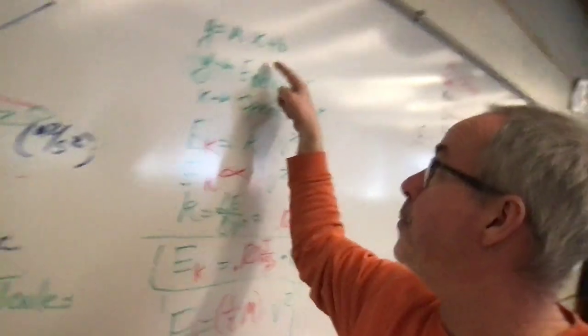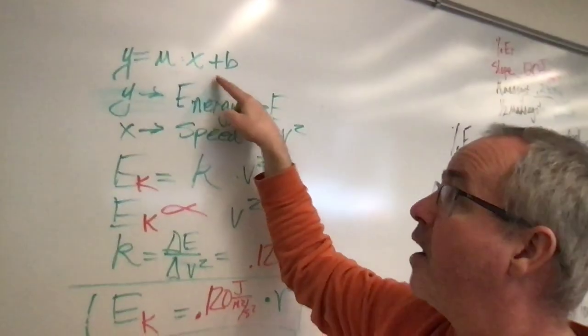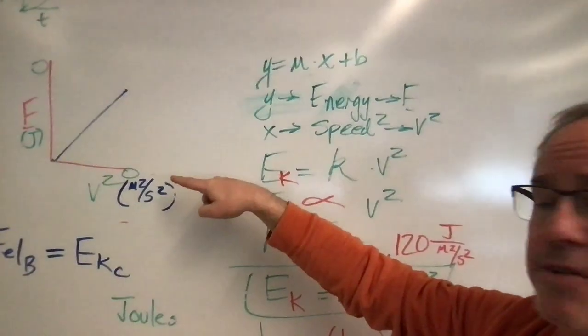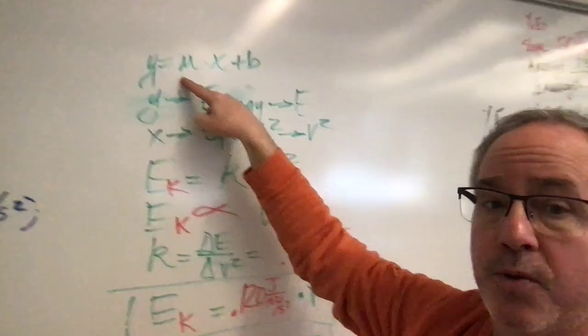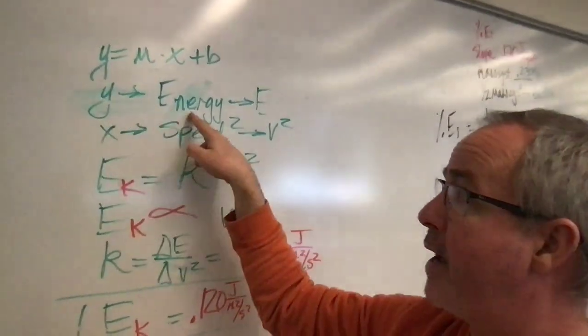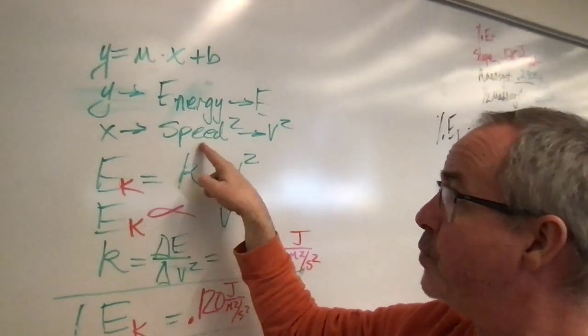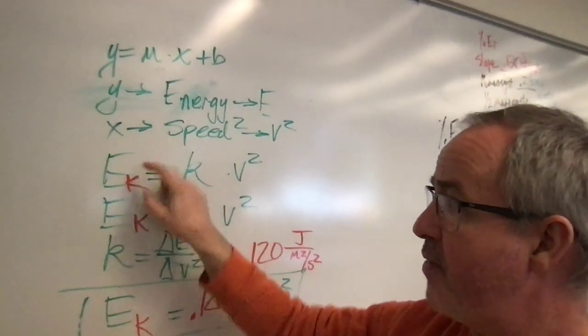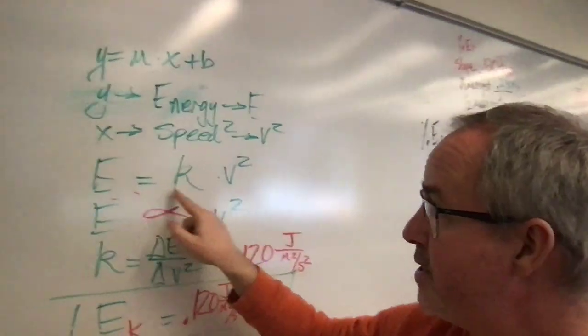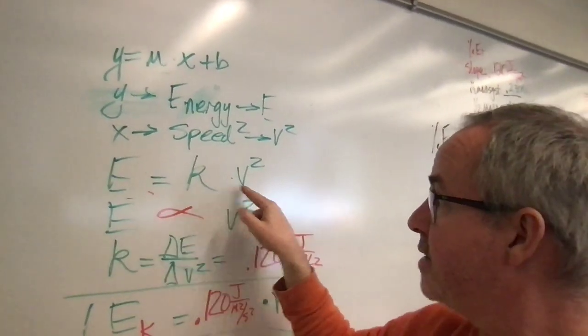So if we take a look up here we've got for that energy versus speed squared graph, we have y equals mx plus b, the y-axis we have energy, the x-axis we have speed squared, so we said that energy is equal to some constant k times the speed squared.